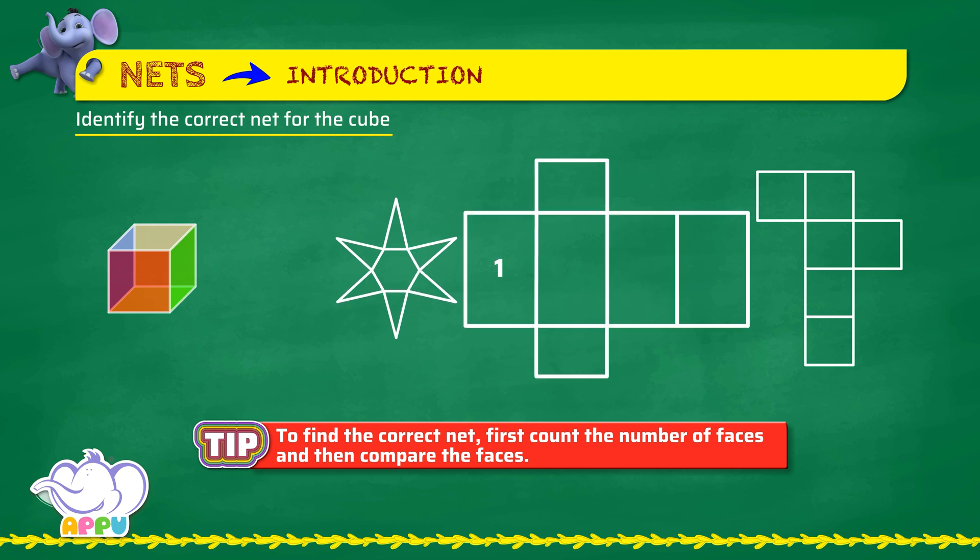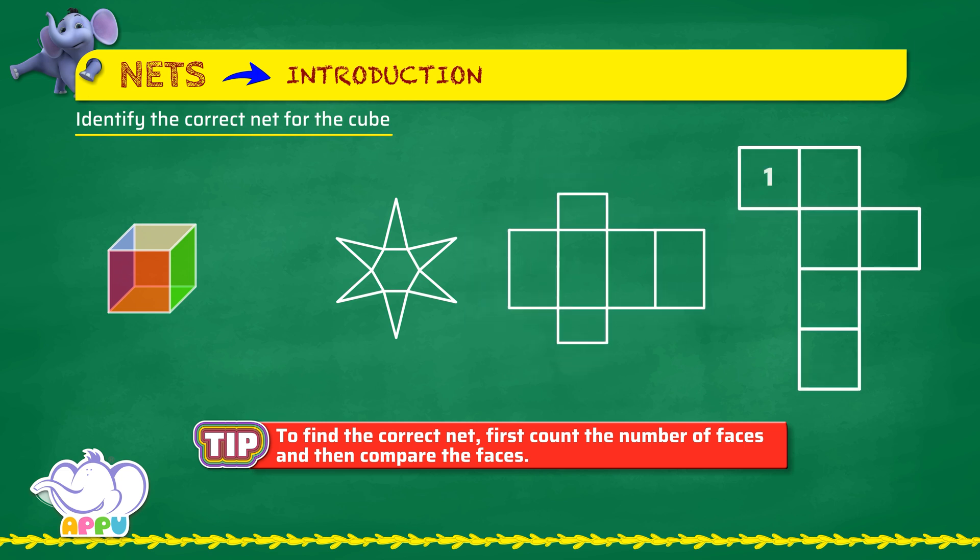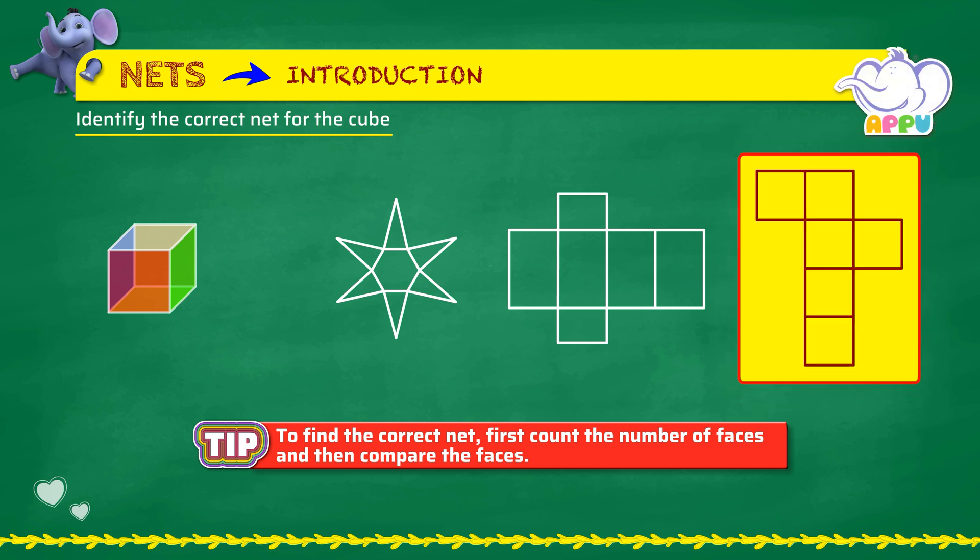This net has six faces, but not all of them are squares, so this is not the correct net either. This net has six faces and all are squares, so this is the correct net for the cube.